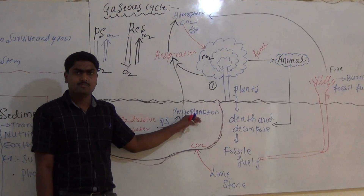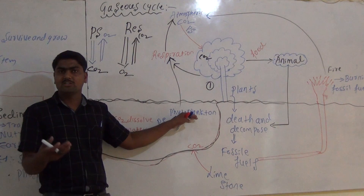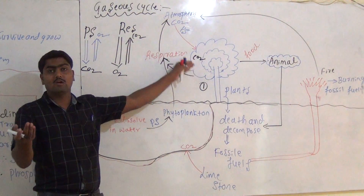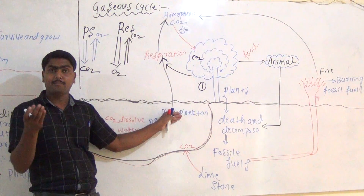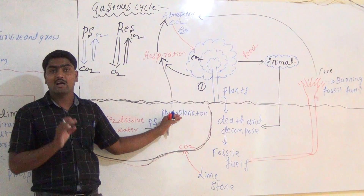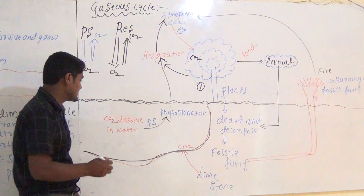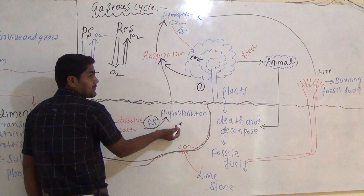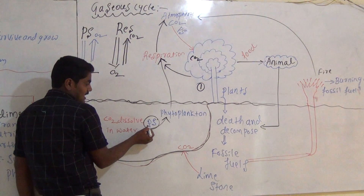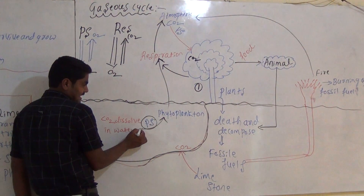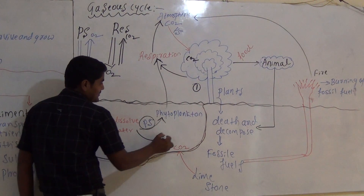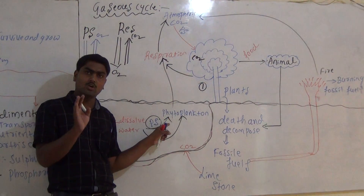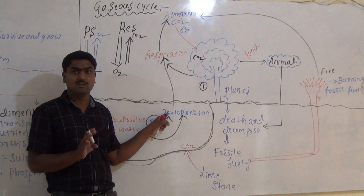The producers in the water are phytoplankton. For the preparation of their food, phytoplankton require carbon dioxide. This phytoplankton undergoes photosynthesis, taking in carbon dioxide from the water. Phytoplankton can also undergo respiration, during which carbon dioxide is released outside into the atmosphere.